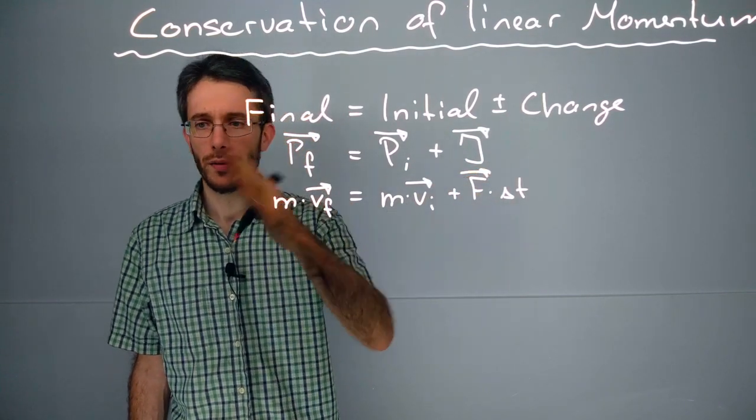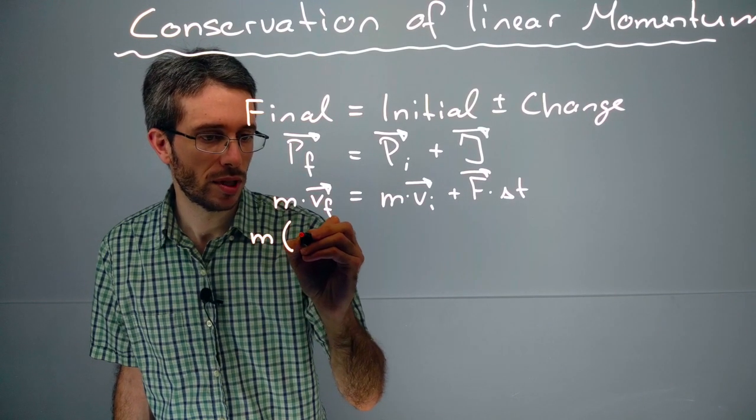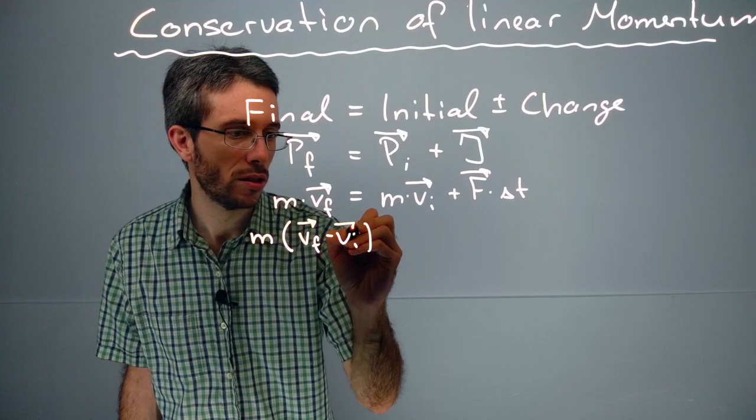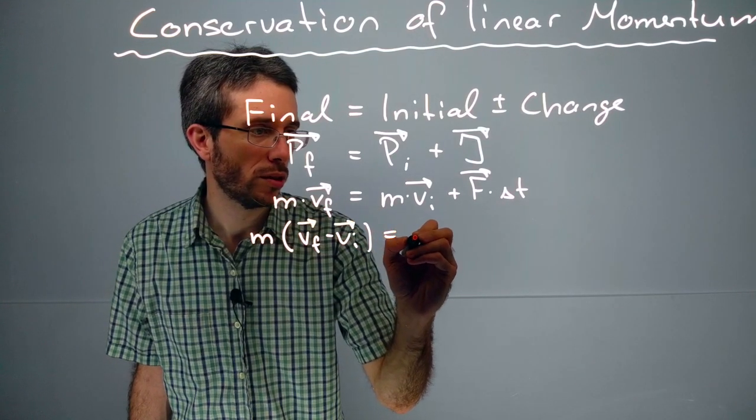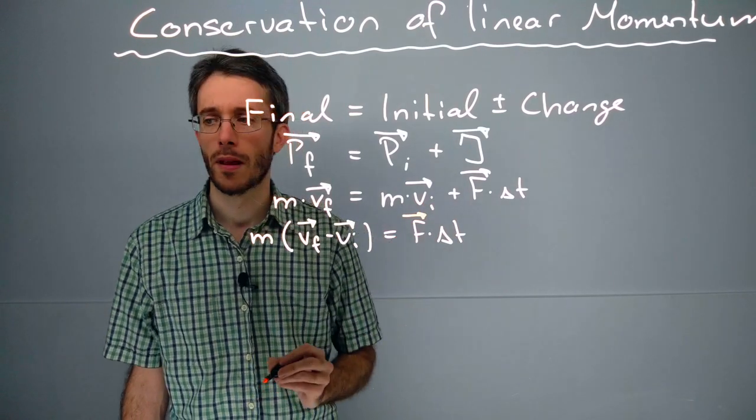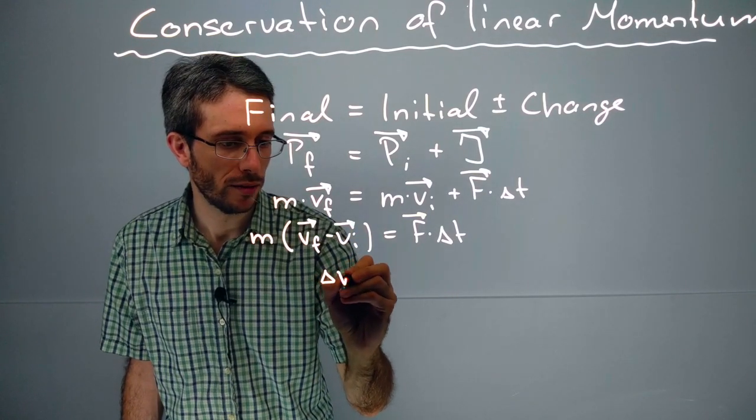If I take the velocity on one side, I get mass times v-final minus v-initial is equal to force times time. Now my difference in velocity, I could rewrite this as delta v.